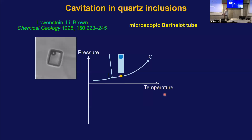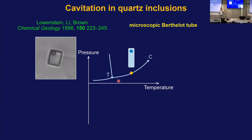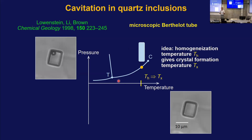Let's go to the physics of this system. Imagine you get one of these inclusions with a bubble in it. You start at liquid-vapor equilibrium; in the pressure-temperature plane this is a point on the binodal curve. If you warm up the system, the liquid expands and the bubble shrinks. At some point, because it's a closed system — this is my definition of confinement — the pressure gets so high that all the liquid occupies the volume and the vapor is completely condensed.